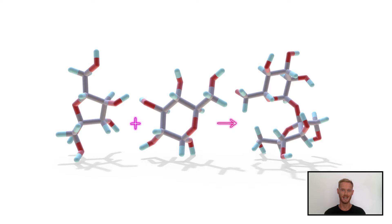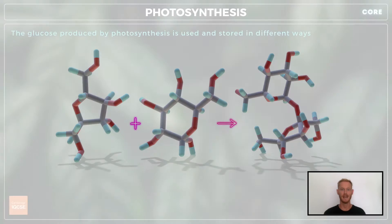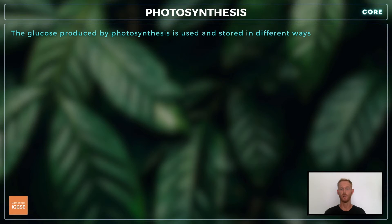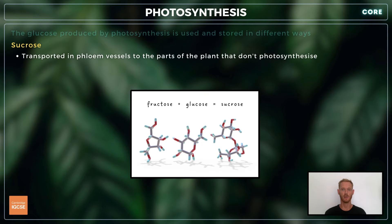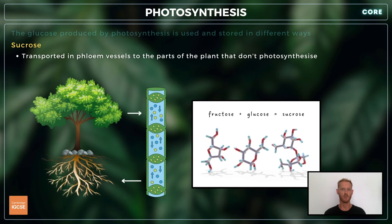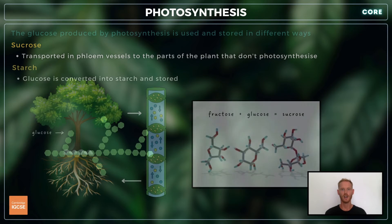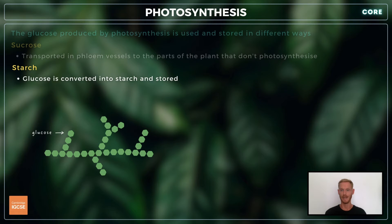The glucose can then be converted into other molecules like starch, cellulose and amino acids. You need to know how the carbohydrates produced are used and stored in plants. The glucose produced through photosynthesis is quickly converted into sucrose, which is the food transport molecule of plants. Starch is an energy storage molecule, meaning any sugar that isn't needed for respiration or the synthesis of other molecules is converted to starch.